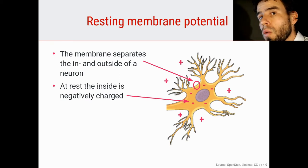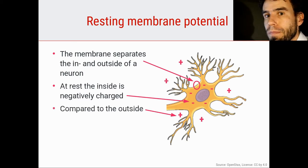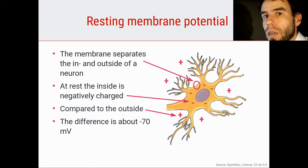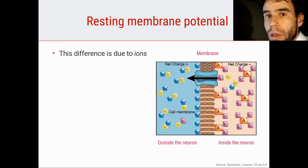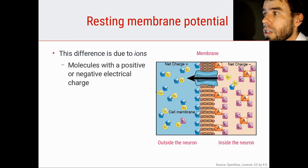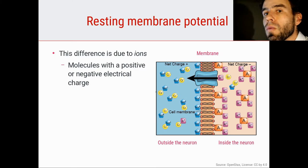When a neuron is doing nothing — so when it is not active — the inside of the neuron is negatively charged compared to the outside, and this difference is about minus 70 millivolts. The exact voltage differs from neuron to neuron, but minus 70 is generally taken as a ballpark figure. The voltage difference is due to ions, and an ion is a molecule that has a positive or negative electrical charge. These ions are not distributed evenly inside and outside of the neuron, and that's what causes the membrane potential.